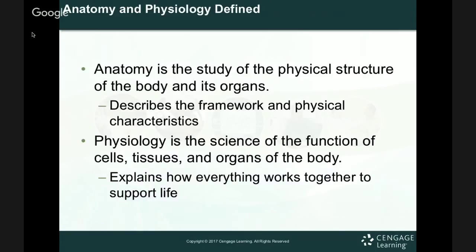The main thing is to learn about anatomy and physiology — we've got to know what that is. Anatomy is the study of the physical structure of the body and its organs — the bone structure and everything that makes up the body, the framework. Physiology is the science of function — the cells, tissues, and organs of the body, and it explains how everything works together. It's important to know both: if you don't know why or how it works, you're missing 50%, and if you can't identify where it is, you miss out as well.